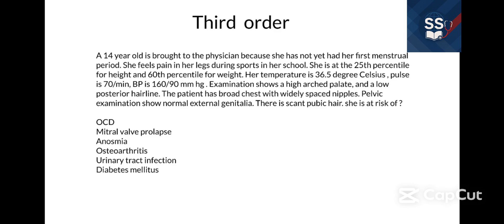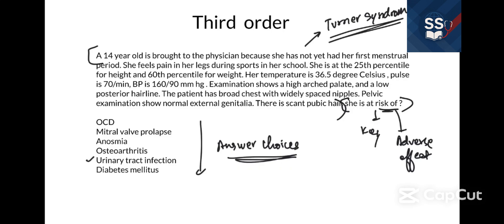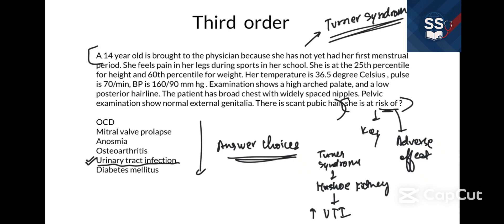Now let's look at the third-order question — increasing the difficulty. The key asks: 'She is at risk of...' — so they're asking about an adverse effect or complication. The stem is the same Turner's syndrome vignette, but the answer here is urinary tract infection. Here's how you get there: first, diagnose Turner's syndrome; second, know that a complication is horseshoe kidney; third, know that horseshoe kidney increases the chances of urinary tract infections. That's the complication of the complication.